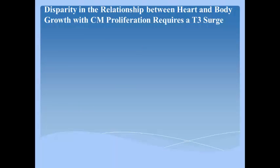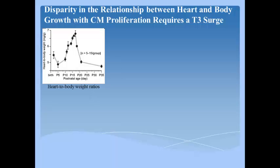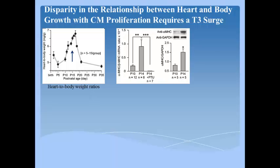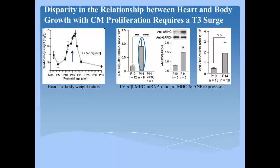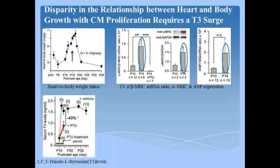Immediately after P10, the rate of heart growth exceeded that of body growth, resulting in a rapid 30% increase in heart to body weight ratio between P10 and P17. Ventricular alpha-beta-MHC mRNA ratio also increased five-fold and alpha-MHC levels increased 2.5-fold, while atrial natriuretic factor mRNA levels, a marker for pathological hypertrophy, were not significantly increased. This molecular and morphological signature suggests a thyroid hormone-mediated effect, since neither physiological nor pathological cardiac hypertrophy causes large increases in the alpha-beta-MHC mRNA ratio.